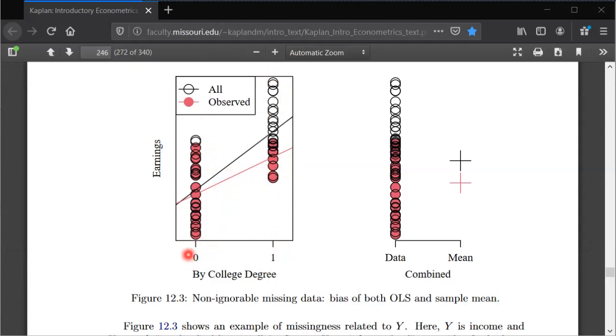we look at people without college degrees, since they're mostly these lower earning individuals, most of them just answer our survey and tell us their earnings. Only these two at the very, very top in the no college group have missing values.